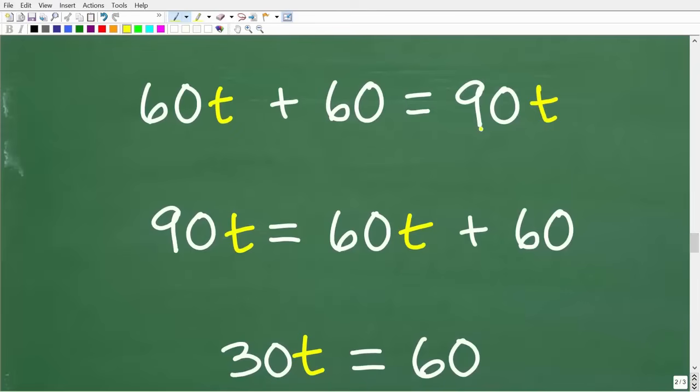All right, so back to our basic equation here. So we're trying to solve for T. And T is the number of hours it's going to take for that faster train to catch up to that slower train. So remember, 60T plus 60, this is the distance of that slower train. Then 90T is the distance traveled by the faster train. And when the distances are equal, that's when that faster train has caught up to the slower train. So just as a reminder of what we're trying to do here, we're trying to solve for T, but we need to understand the concepts.